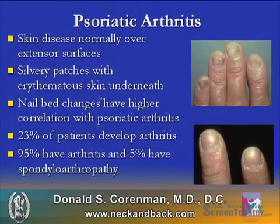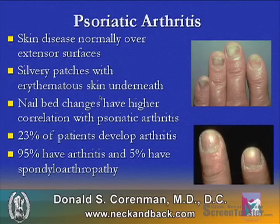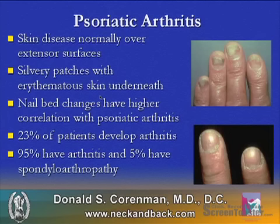Psoriatic arthritis is a typical disease. It's estimated that 3% of the population has psoriasis, a skin disease normally seen with silvery erythematous patches over extensor surfaces. Patients with nail bed changes, as seen on the right, have a higher correlation with the arthritic component of psoriasis. 23% of patients with nail bed changes will develop arthritis, and 5% will have spondyloarthropathies.